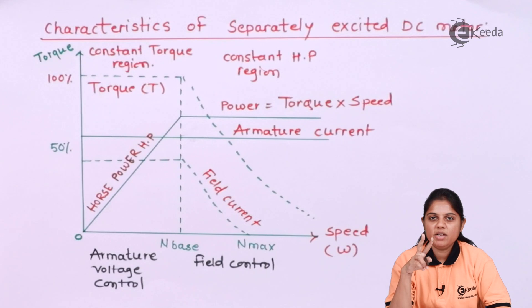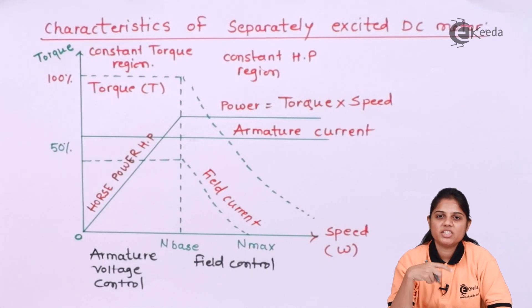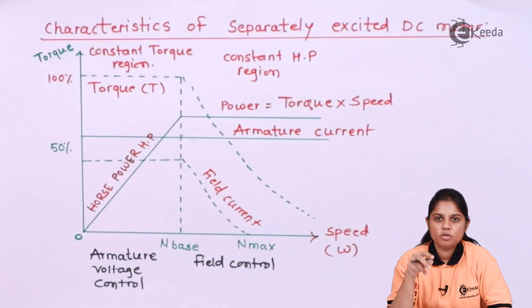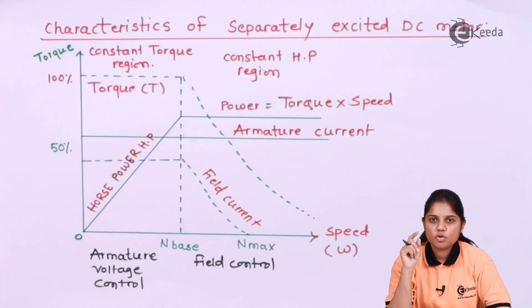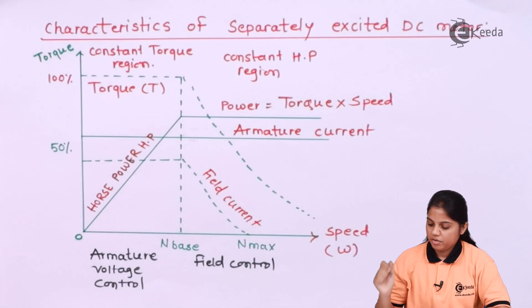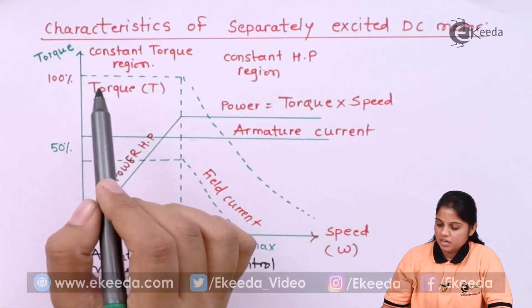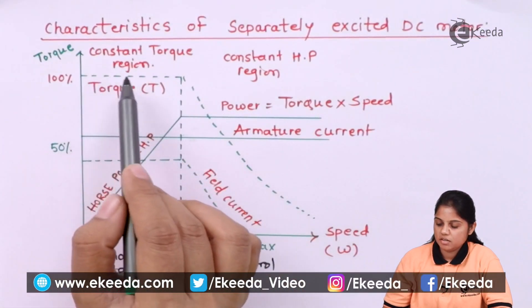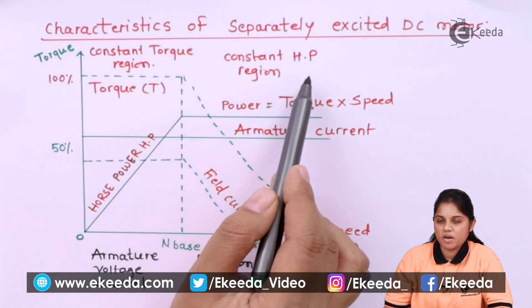Basically, as I mentioned, you can either change the armature voltage or change the field current to control the speed of the motor. This graph is divided into two sections: the constant torque region and the constant horsepower region.